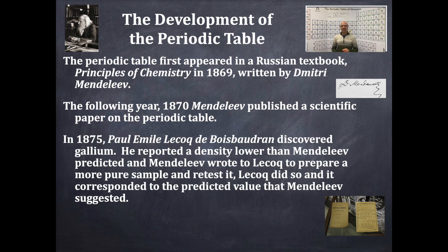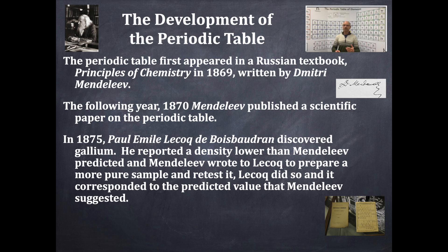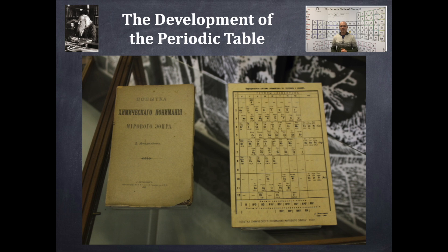In 1875, Paul-Émile Lecoq discovered gallium and reported a density lower than what Mendeleev had predicted from his periodic table. Mendeleev wrote to Lecoq and suggested he prepare a more pure sample and retest it. Lecoq did so, and the result did correspond to Mendeleev's prediction.